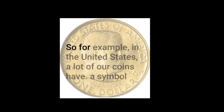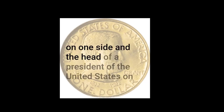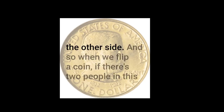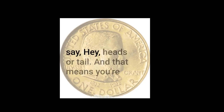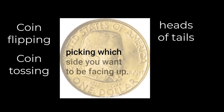So for example, in the United States, a lot of our coins have a symbol on one side and the head of a president on the other side. And so when we flip a coin, if there's two people in this decision — which there usually is — someone will say, 'heads or tails.' And that means you're picking which side you want to be facing up.